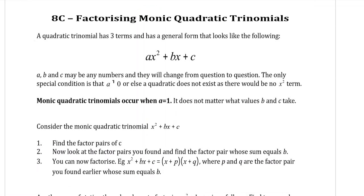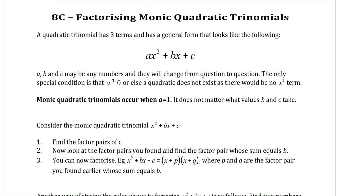Moving on to our next section: the monic trinomial. A trinomial, as hinted in the name — the 'tri' — means that we have three terms. So three terms will be in the form ax squared plus bx plus c. The key thing is that you will have an x squared, an x, and a constant. Now the a, b, and c in a trinomial could take on any number. But in order for it to be monic, it means that a would need to be equal to 1.